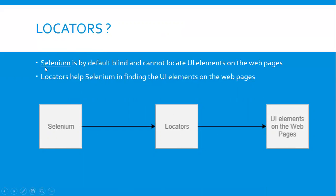Many people make the mistake of learning Selenium first before learning locators — that's not recommended. I recommend everyone to learn locators in detail first, and when you are very good at locators, then switch to Selenium. Without learning locators, it's not recommended to learn Selenium, as you will eventually face a lot of problems. If you learn locators before Selenium, your journey of learning Selenium will be very smooth and you will enjoy it. That's why locators should be learned first. As Selenium cannot locate UI elements directly, it takes help from locators, which are then passed to Selenium so it can find UI elements on web pages.